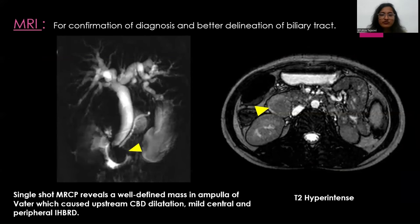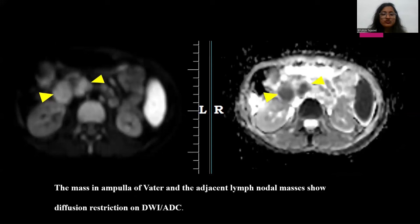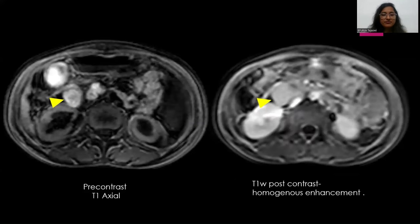MRI was done for confirmation of the diagnosis and for better delineation of the biliary tract. Single-shot MRCP reveals a well-defined mass in the ampulla of Vater, causing upstream dilatation of the CBD and mild central and peripheral IHBRD. This mass appears hyperintense on T1 and shows diffusion restriction on DWI/ADC mapping. The adjacent lymph nodes show similar restriction. The mass demonstrates homogeneous mild post-contrast enhancement.